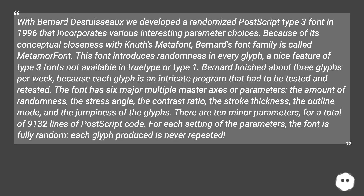The font has 6 major multiple master axes or parameters: the amount of randomness, the stress angle, the contrast ratio, the stroke thickness, the outline mode, and the jumpiness of the glyphs. There are 10 minor parameters, for a total of 9,132 lines of PostScript code. For each setting of the parameters, the font is fully random — each glyph produced is never repeated.